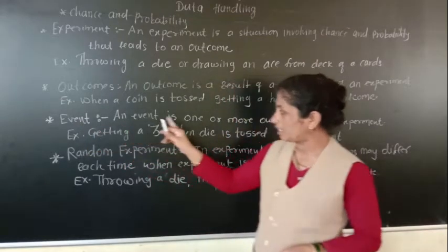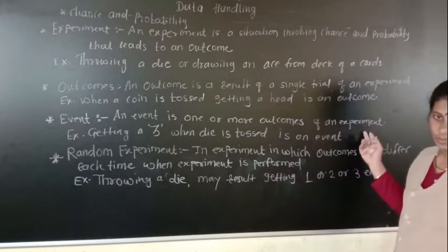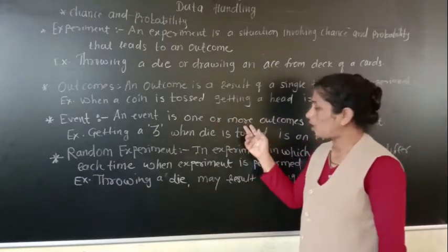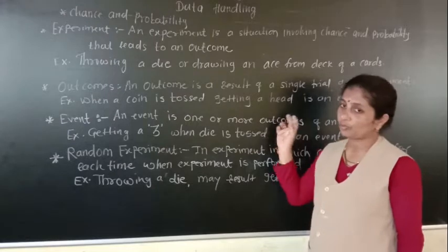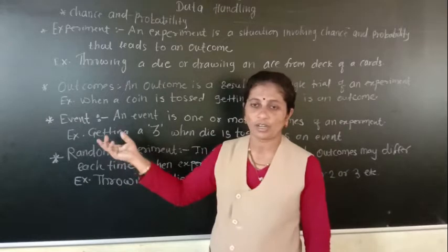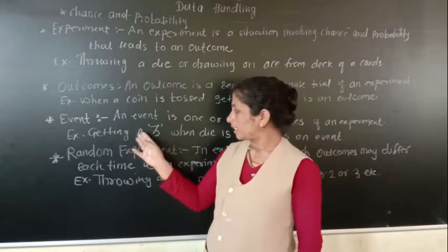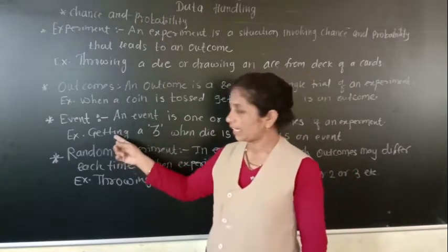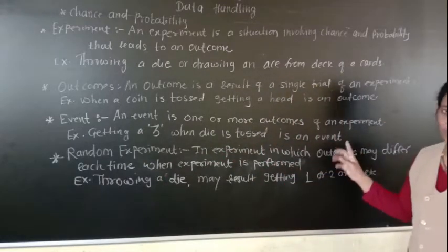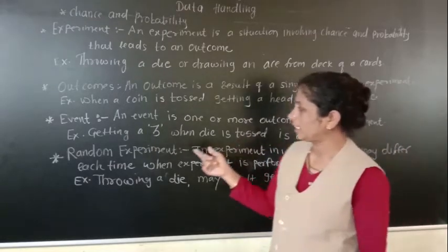An event is one or more outcomes of an experiment. Whatever experiment we are doing, if you get one or more outcomes, that is the event of that trial. For example, getting a three when a die is tossed is an event. When the die is tossed, getting a three — that is your event of that experiment.